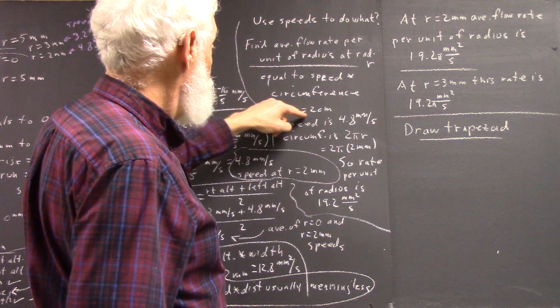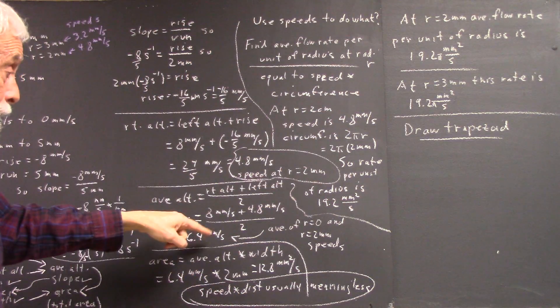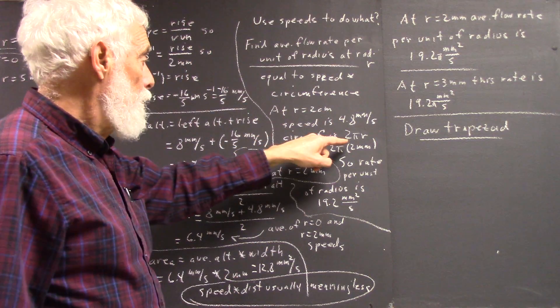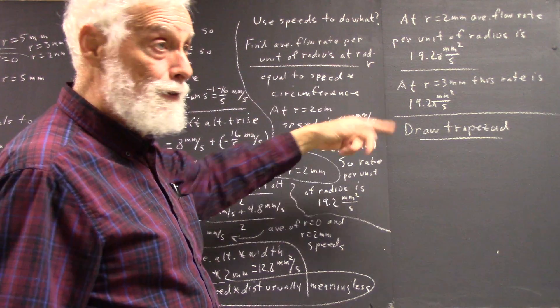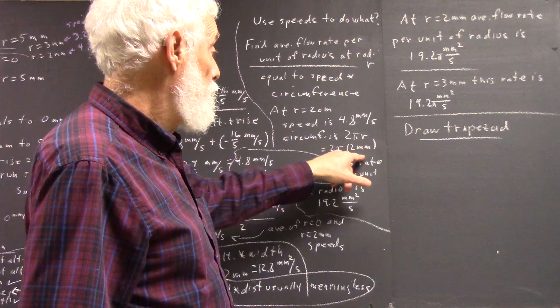Well, if r equals 2 centimeters, we've figured out that the speed is 4.8 millimeters per second. Circumference is 2π times the radius, that's the circumference of the circle of radius r, which is 2π times 2 millimeters.